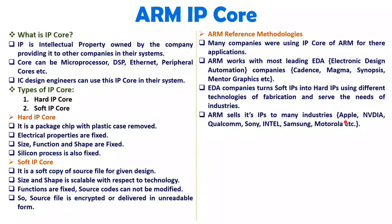ARM is selling their IPs to many industries like Apple, NVIDIA, Qualcomm, Sony, Intel, Samsung, and Motorola — there are many more companies using the ARM core inside their chip. For the hard copy, ARM works with many EDA companies and those EDA companies turn soft IPs into hard IPs using different technologies such as 5 nanometer or 10 nanometer. Various technologies are available for fabrication and based on the need, that fabrication can be done and provided to various industries.